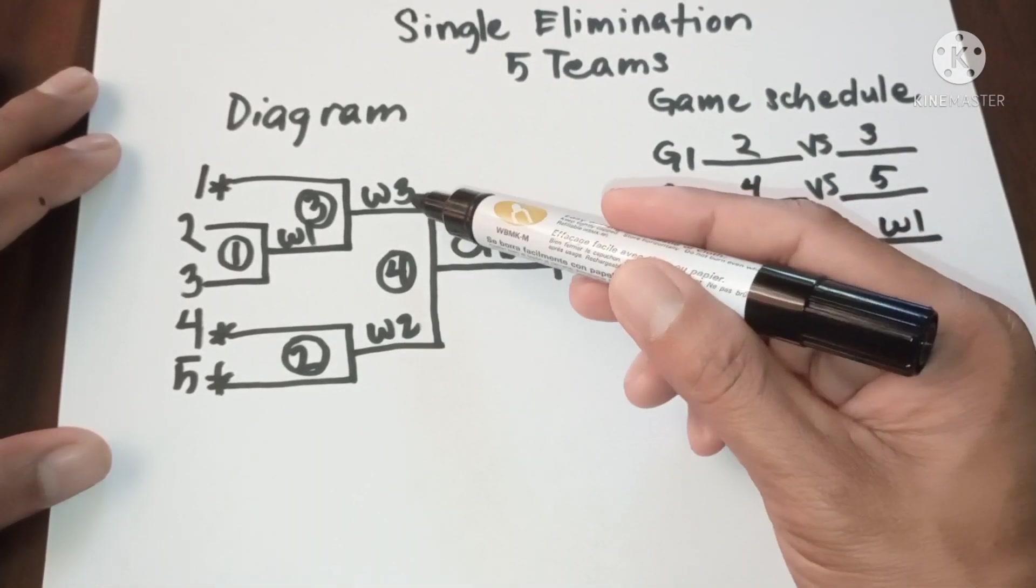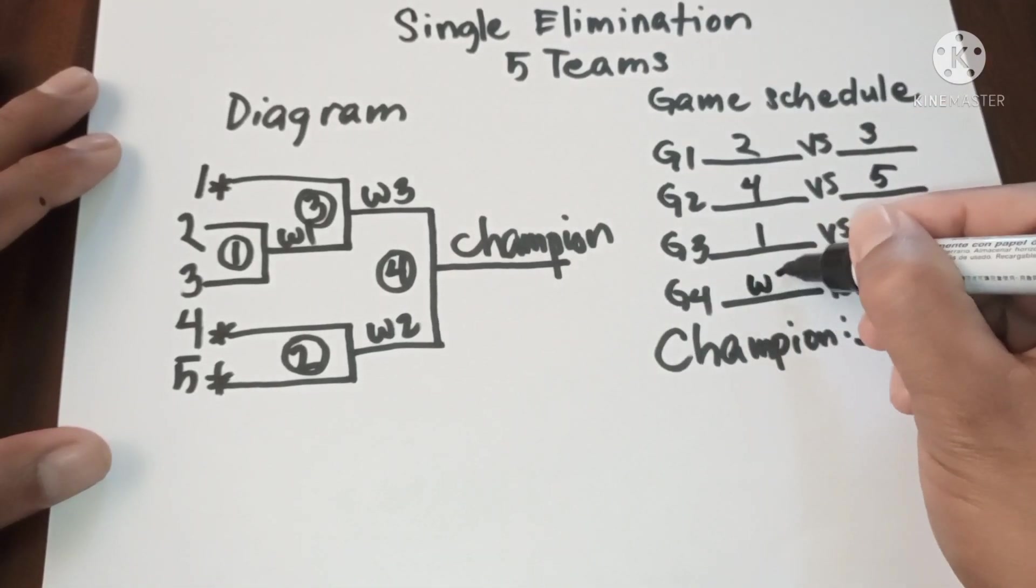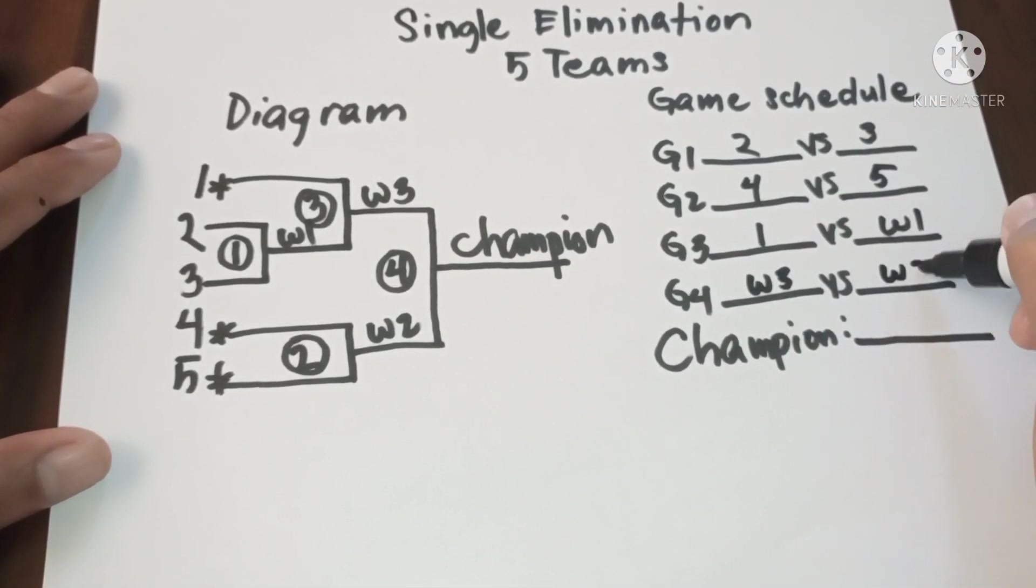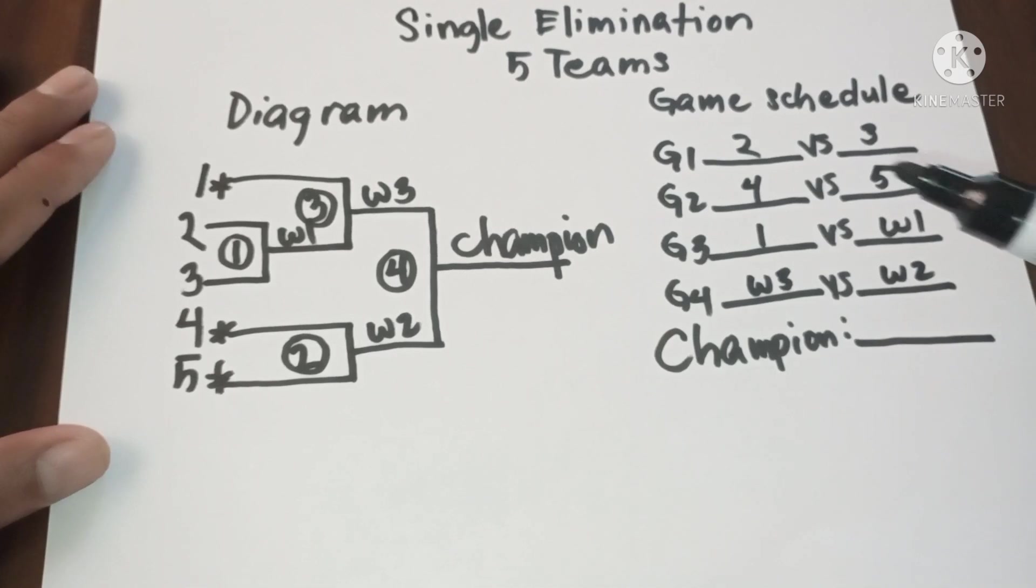In game four we have winner three versus winner two, then champion. So this is the diagram for five teams and then the game schedule.